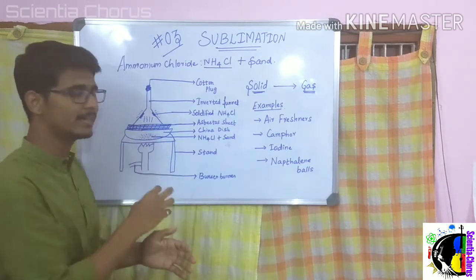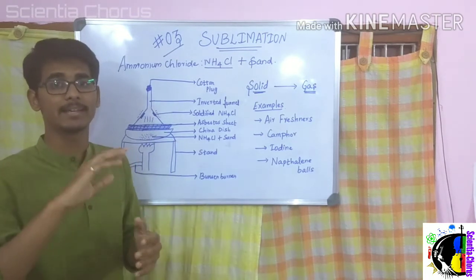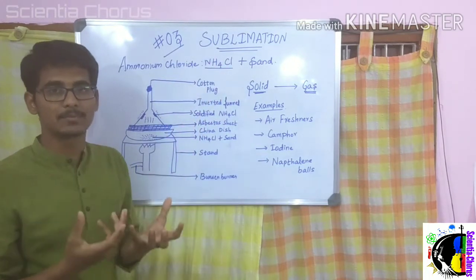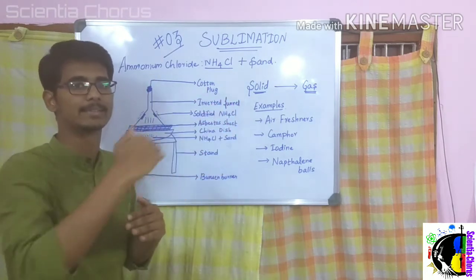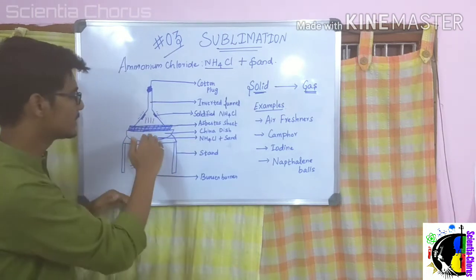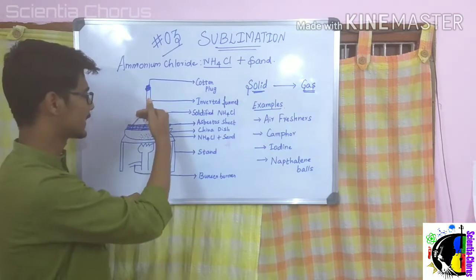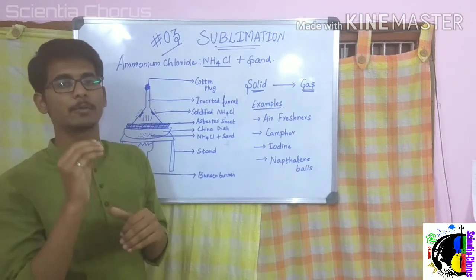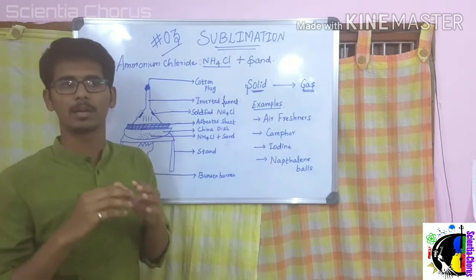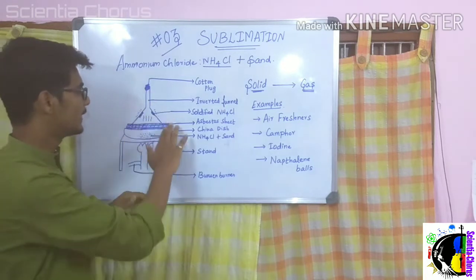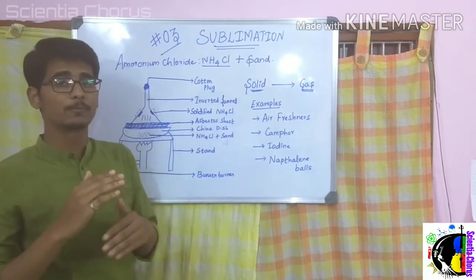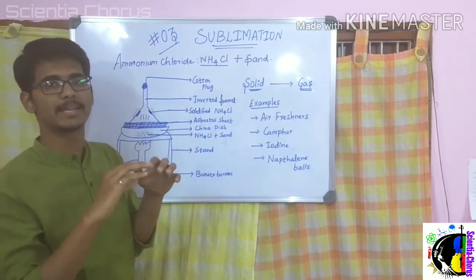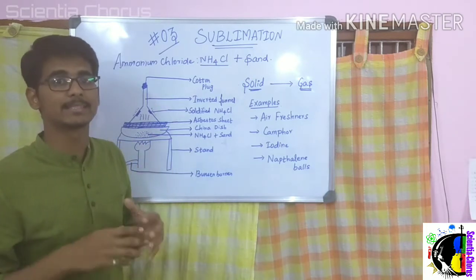These vapors are nothing but ammonium chloride. Ammonium chloride, which was in solid state, after heating is directly converting into vapor state — this is sublimation. The substance converting from solid to gas is called a sublimable substance. The inverted funnel is wetted with cold filter paper or a wet cloth on its walls so that when the vapors enter the funnel, due to the cold temperature they get condensed.